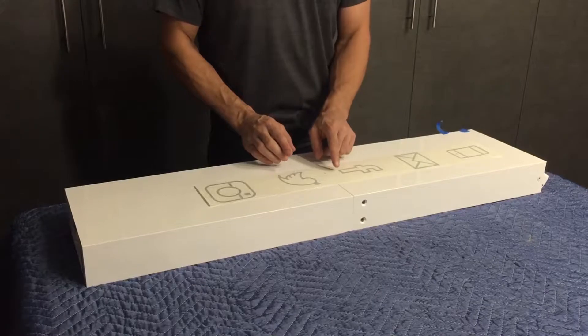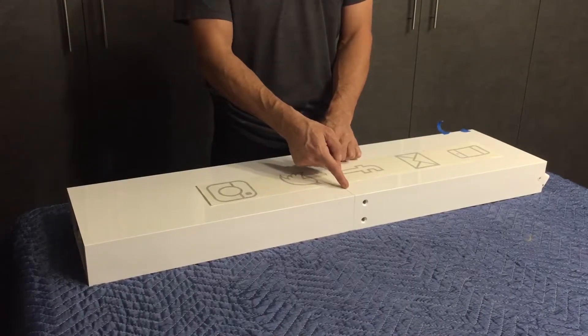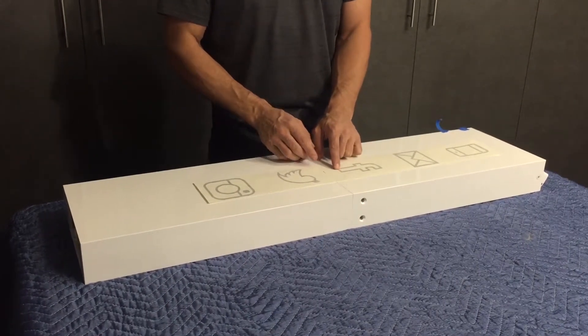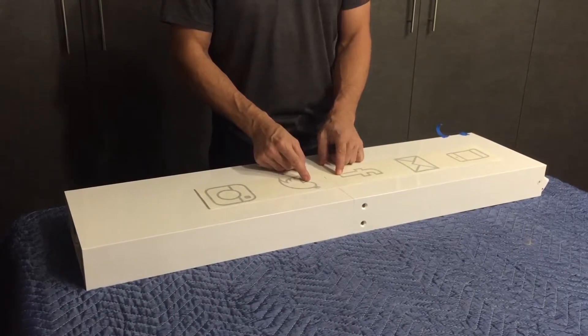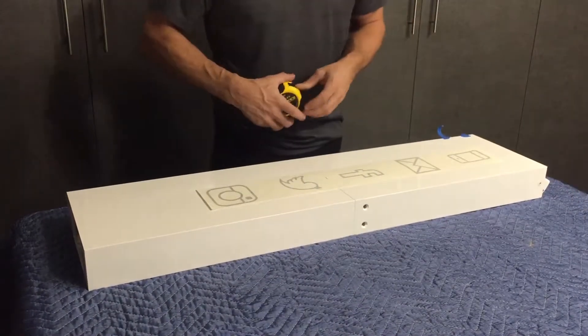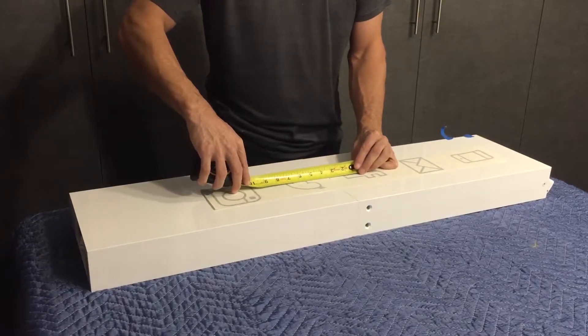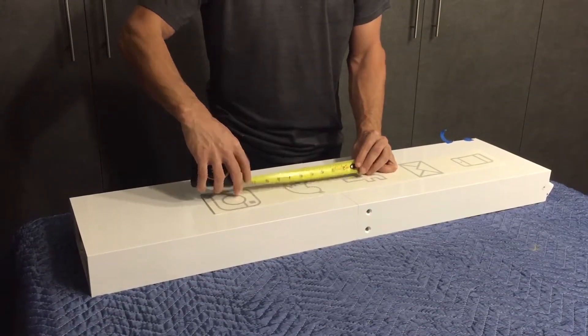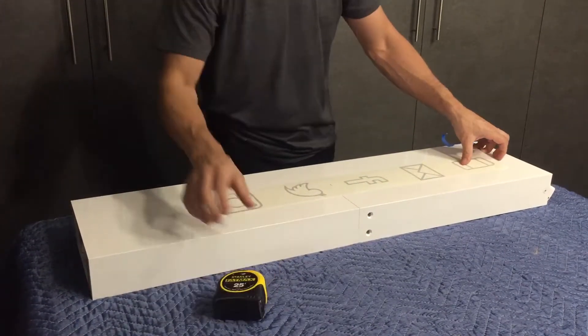First we're going to center the seam between the Facebook icon and the Twitter icon. If you measure down from the Facebook icon an inch and 5 sixteenths, that will get you your center line here.